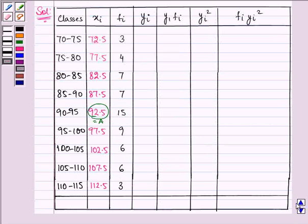Now what we need to do is we need to find yi that is xi minus A upon h. So it will be minus 4, minus 3, minus 2, minus 1, 0, 1, 2, 3, 4.